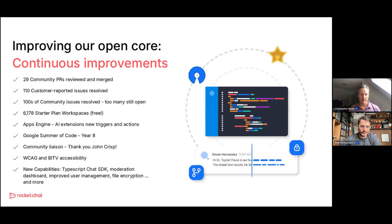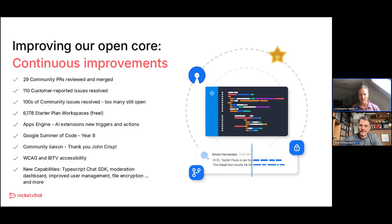We've added back a community liaison. A big thank you to John Crisp, a key part of our community for many years, who has stepped back into this liaison role — contributing a lot of his time to support community members in our open channels, forums, and GitHub issues. Please pass along your thanks to John.